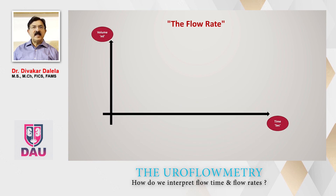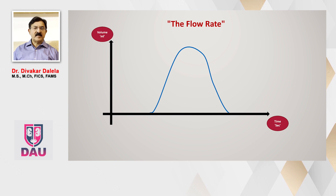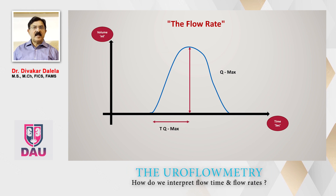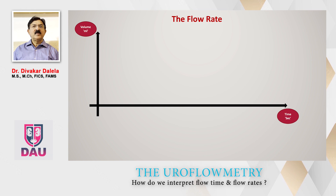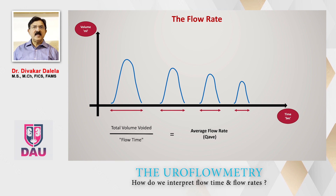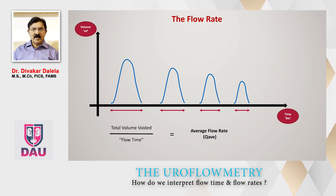Now about flow rate: in each uroflowmetry graph you have x and y axes. The highest point of the graph is taken as Q-max, and the time to reach Q-max is called time to Q-max. There is another term — average flow rate. If the patient voids in spurts over some time, you divide the total volume voided by the flow time to get the average flow rate. So in uroflowmetry we have two flow rates: maximum flow rate and average flow rate.